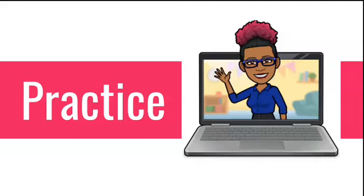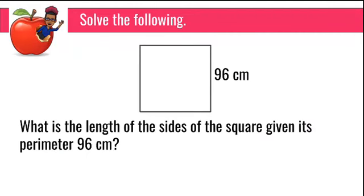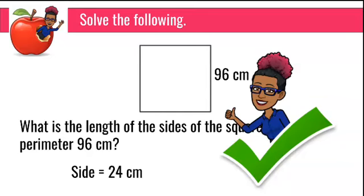Now let's do a quick practice. What is the length of the sides of the square, given its perimeter of 96 centimeters? This question tells us the distance around the square is 96 centimeters, and we need to find the side length. We take the perimeter and divide by 4 — all sides are equal — so 96 divided by 4 gives us 24 centimeters. Each side of the square equals 24 centimeters.